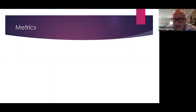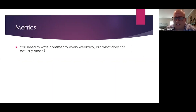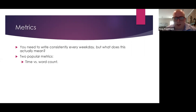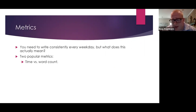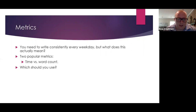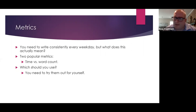Let's talk about metrics — how we should measure whether we're being consistent. You need to write consistently every weekday, but what does this actually mean in practice? There are two popular metrics scholars like to use: time versus word count. The time metric people say they'll write for a certain set amount of time — for example, two hours every day, five days a week. The word count people say they'll try to hit a certain word count goal every day — say, 500 or a thousand words, five or six days a week. Which should you use? You're going to need to try them out for yourself. I know very successful time people and very successful word count people. There's no general answer.